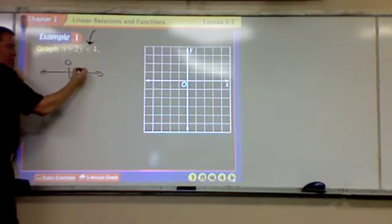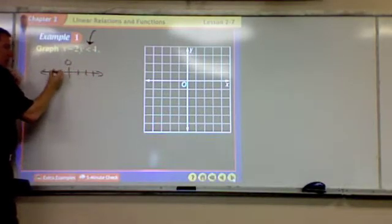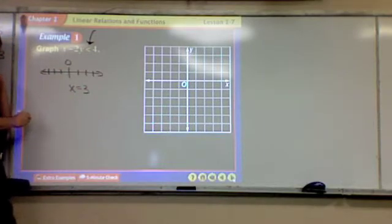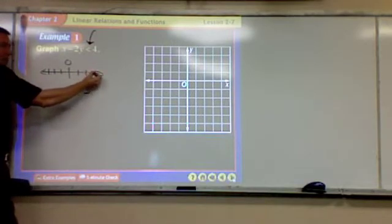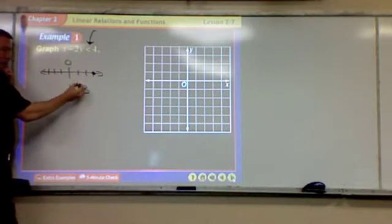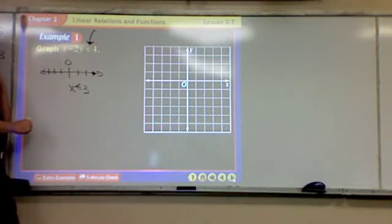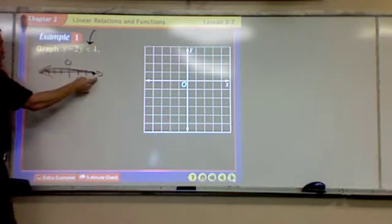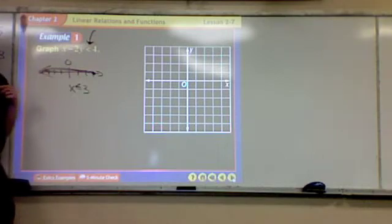Here's my number line. If I say x is equal to 3, what do I do? I draw a circle on 3, right? Well, if I change that to x is less than or equal to 3, then you'll put the dot on the 3 and go to the left, which means there's a boundary and there's shading. Do you see that? There's a boundary and there's shading.